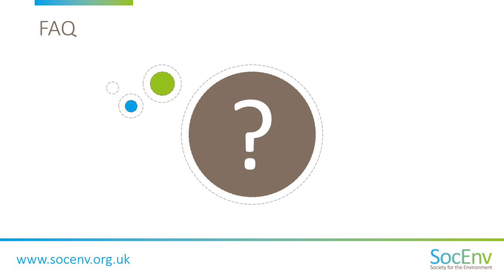Thank you. The next question is: what are the benefits of becoming a Registered Environmental Practitioner? The main benefits are you can call yourself a Registered Environmental Practitioner and use the RFP letters after your name. A huge benefit of that is that you are signifying that you have been judged by your peers to have met the standards, which holds a lot of weight when talking with your clients and employers. Another benefit is that if you are aiming for chartership, you have experience of going through part of the process to gain professional registration, which will stand you in good stead for your Chartered Environmentalist application as well.